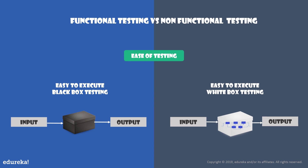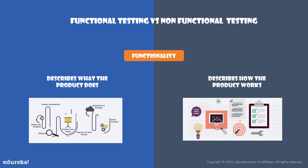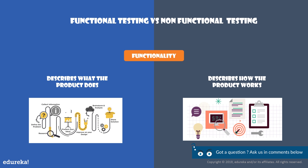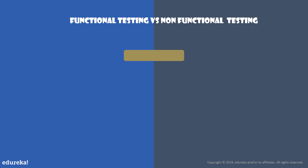For ease of use, functional testing finds it easy to execute black box testing, where the internal structure or implementation process is not known to the user. Non-functional testing finds it easy to execute white box test cases, where the internal structure is known to the user. Regarding functionality, functional testing describes what the system should do, whereas non-functional testing describes how the system should work.